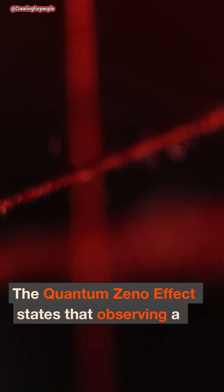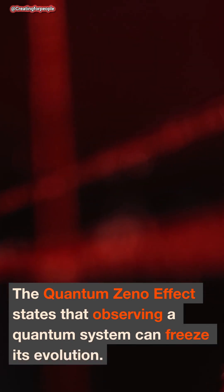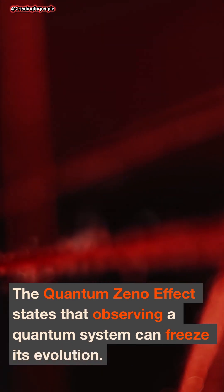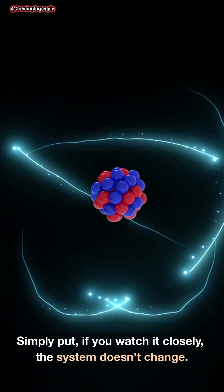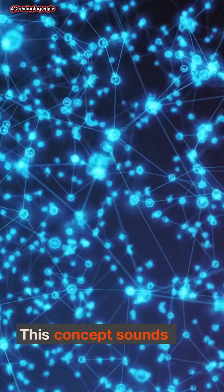The quantum Zeno effect states that observing a quantum system can freeze its evolution. Simply put, if you watch it closely, the system doesn't change. This concept sounds strange, but let's break it down.